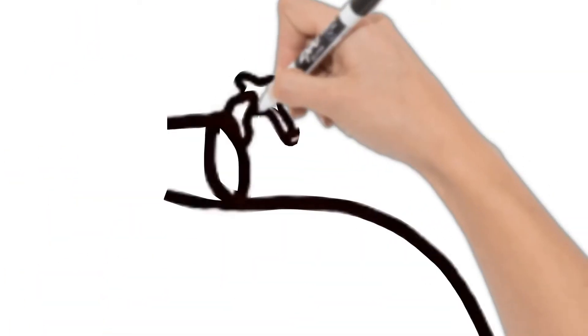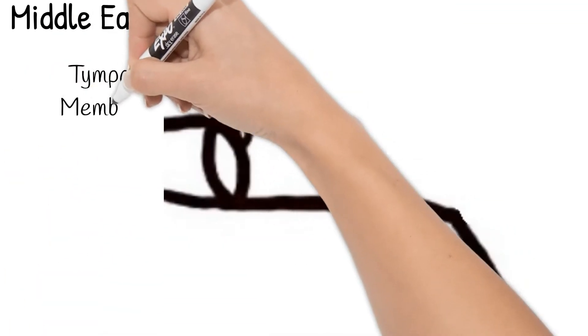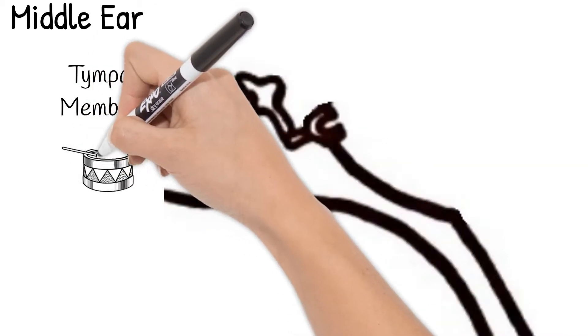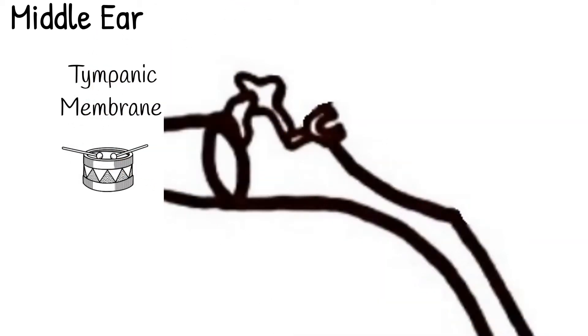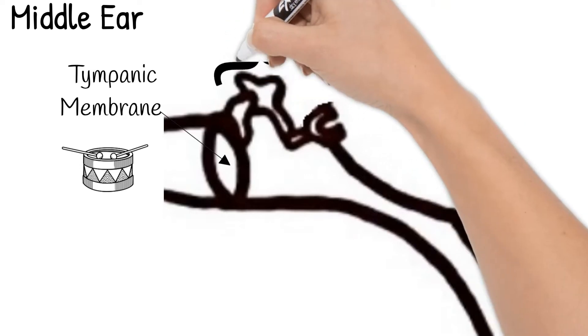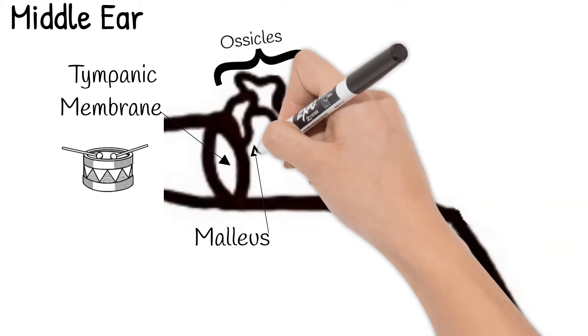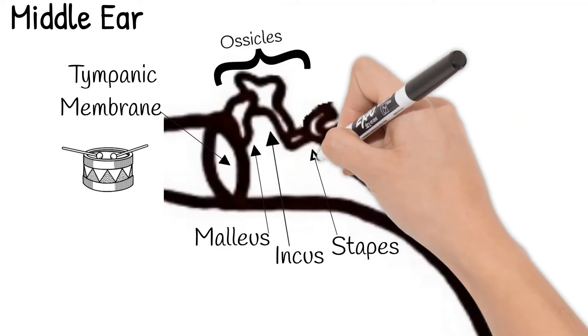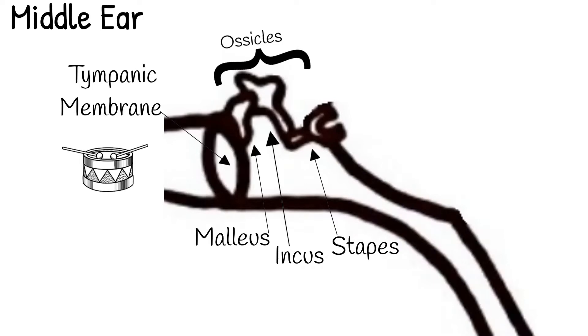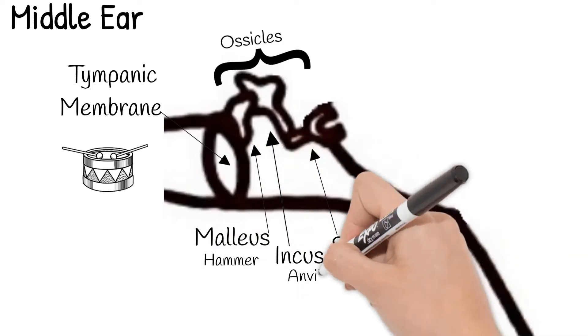The middle ear begins with the tympanic membrane which is also known as your eardrum. The tympanic membrane stretches across the end of your auditory canal and it moves as sound waves run into it. On the other side there are three little bones called ossicles. These bones are the malleus, incus, and stapes. Their more common names are hammer, anvil and stirrup.